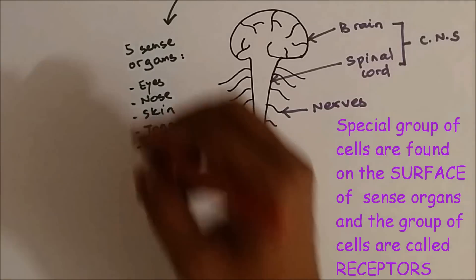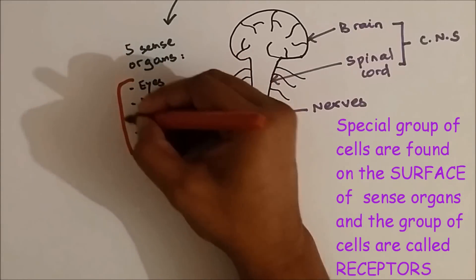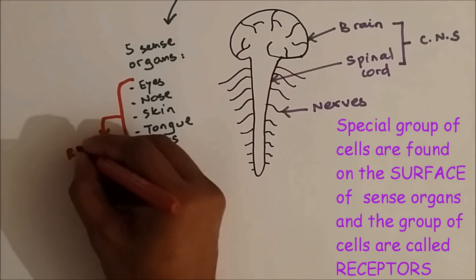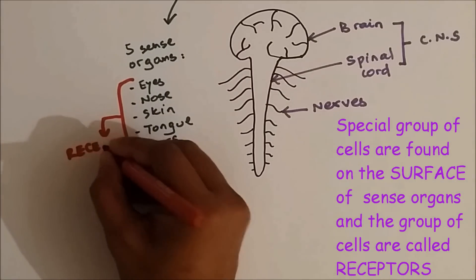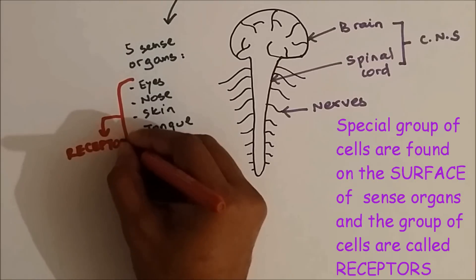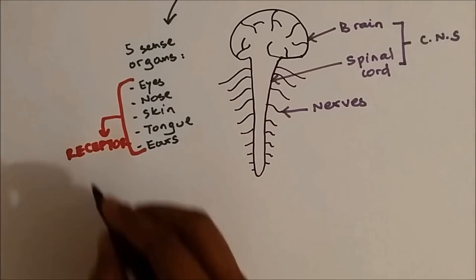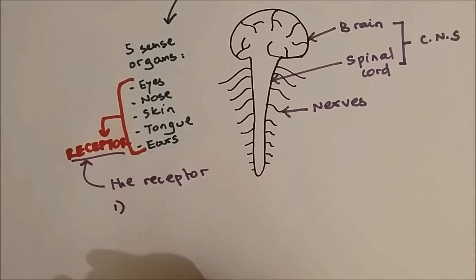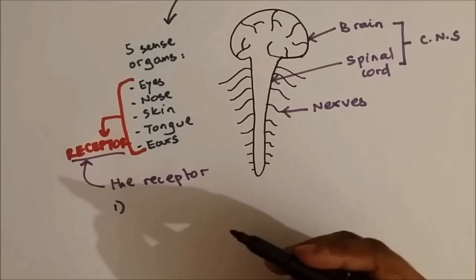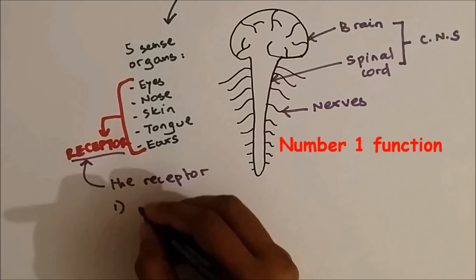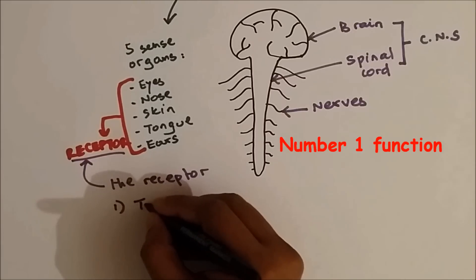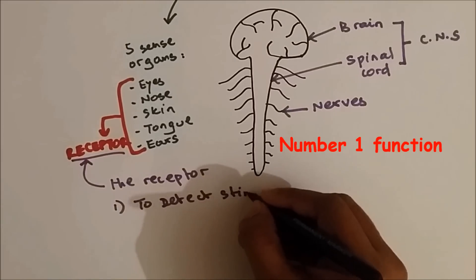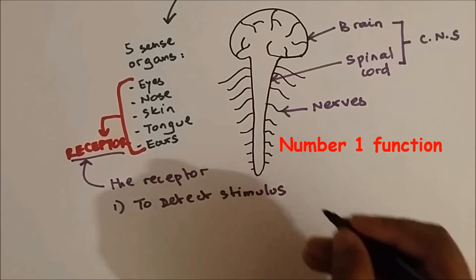All the sense organs have something on their surface — a group of cells which are very important, and it's called a receptor. The receptor has two functions. The first function is to detect stimulus.